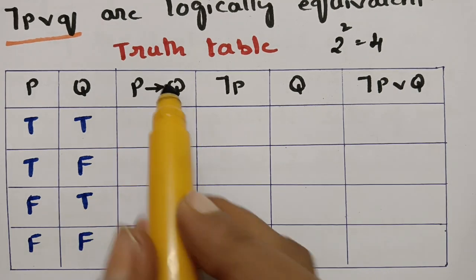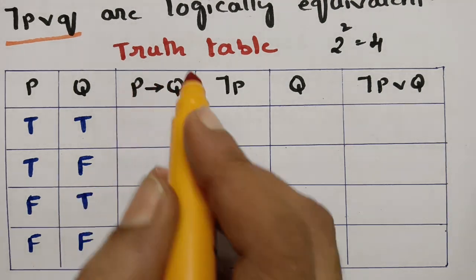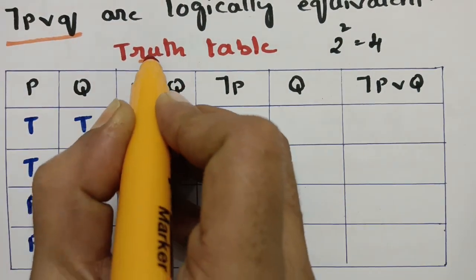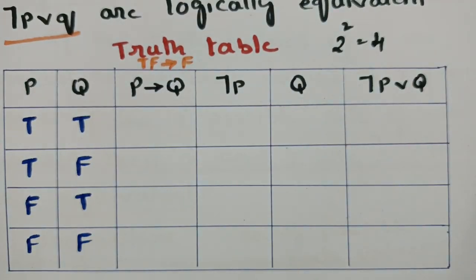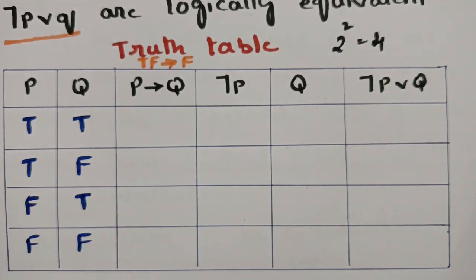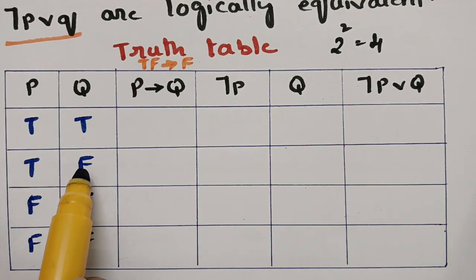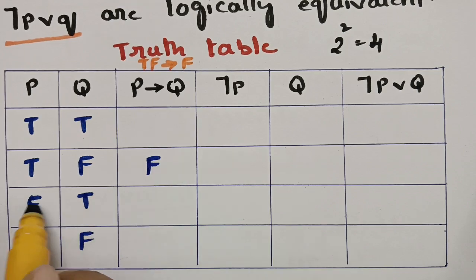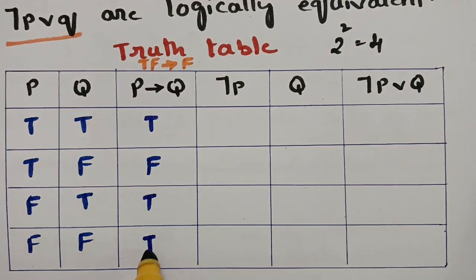Now we need p implies q. The logic for implies: if the first value is true and the second is false, immediately write false. So comparing p and q row by row: true-true is true, true-false gives false, false-true is true, false-false is true. The only false is where p is true and q is false.